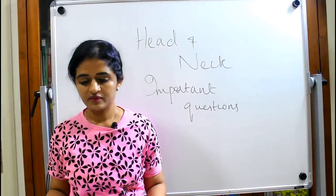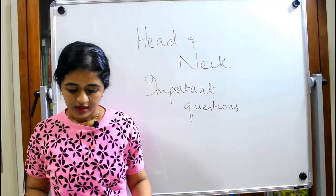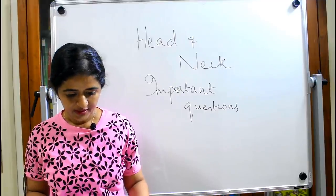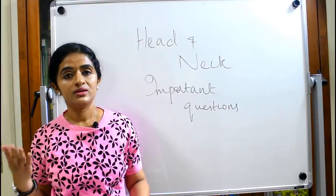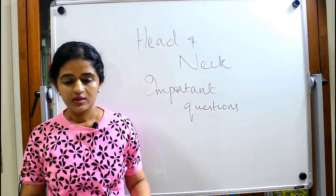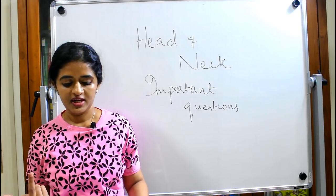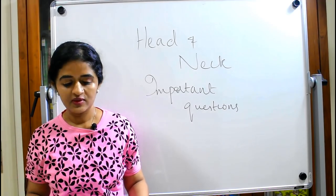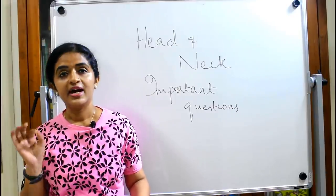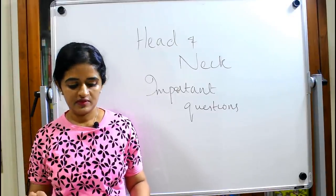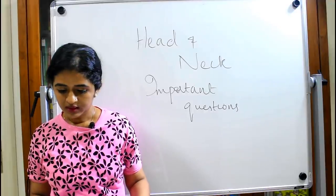The intrinsic ligaments of the larynx and the muscles of the larynx are very very important. The nerve supply of the larynx — both sensory and motor — and what happens if there is damage to the recurrent laryngeal nerve or the external laryngeal nerve. These may appear as sub-questions in a structured essay. Laryngocele is also a favorite question.